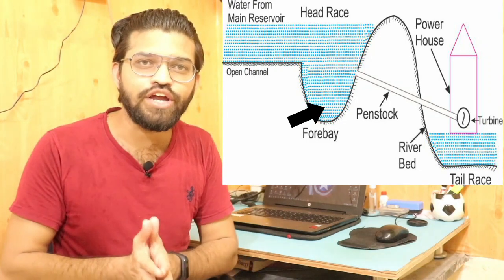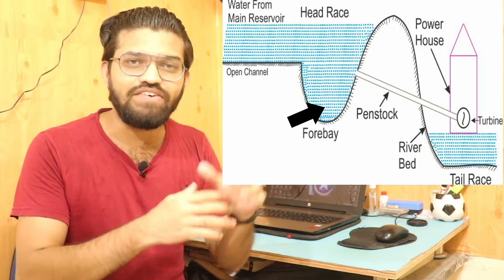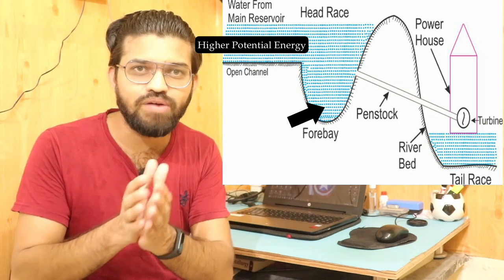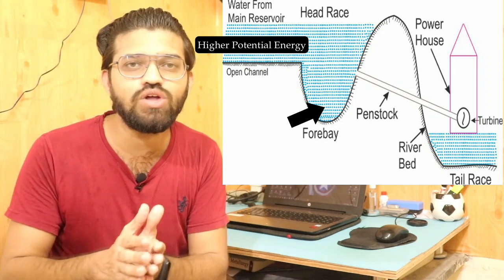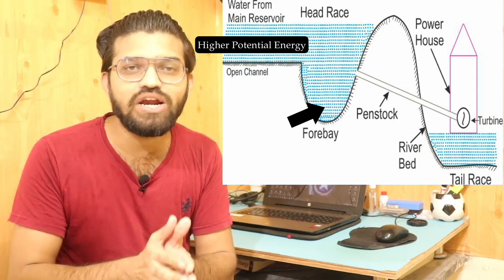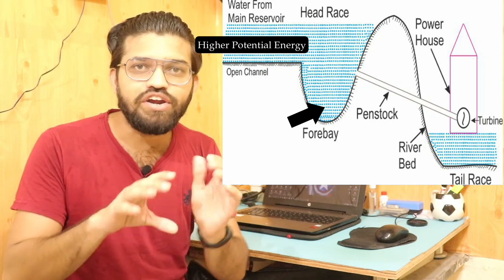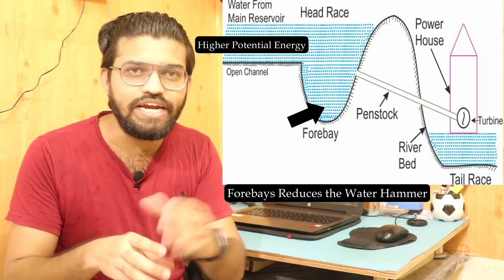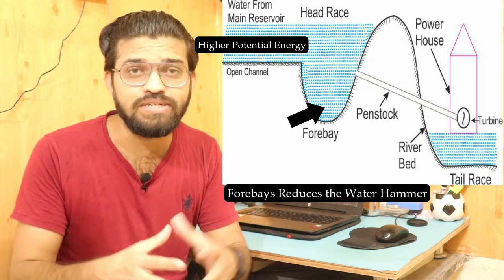What happens inside that particular tunnel? The water is stored at higher elevation with a higher potential head, meaning water has higher potential energy. When this water flows down through a smaller outlet at the bottom, the water flows with higher velocity — the potential energy gets converted into kinetic energy. So we get more velocity and more pressure at the bottom. These forebays will act as a flow regulator, a flow controlling system.